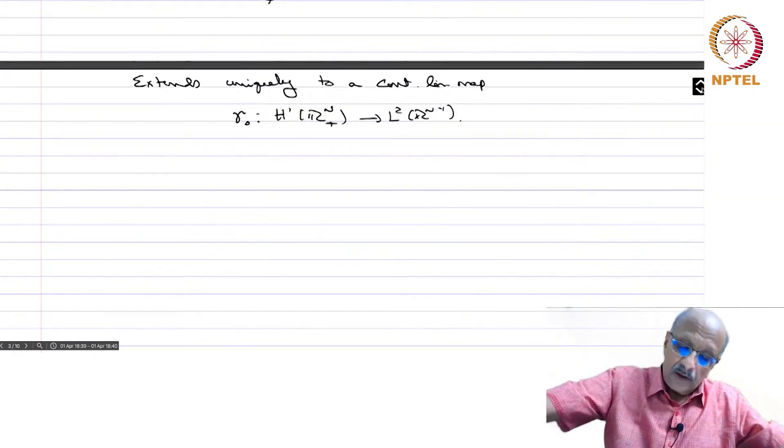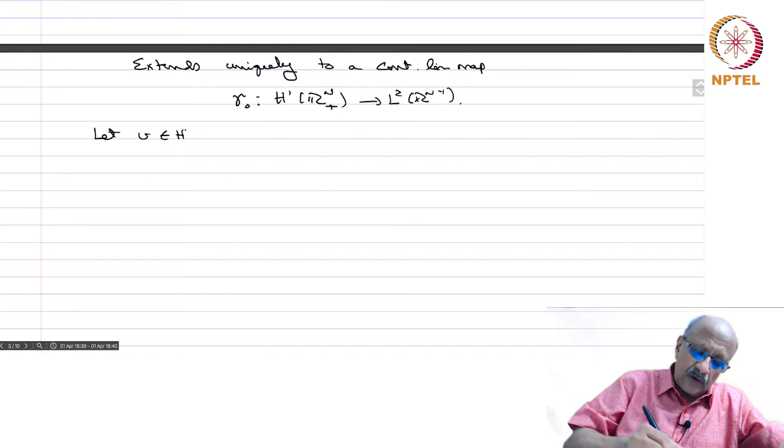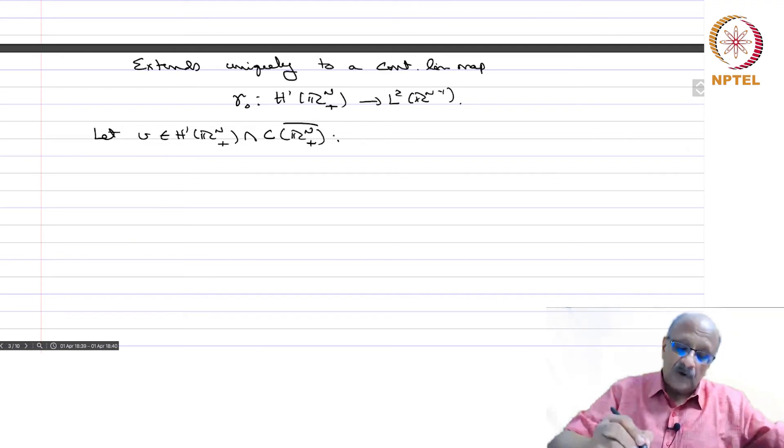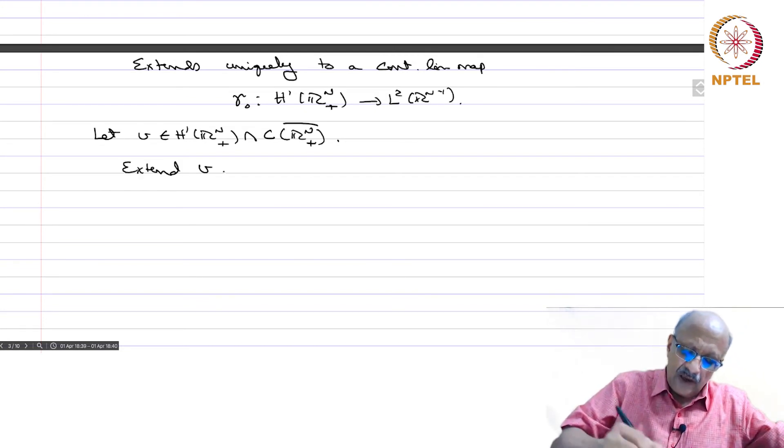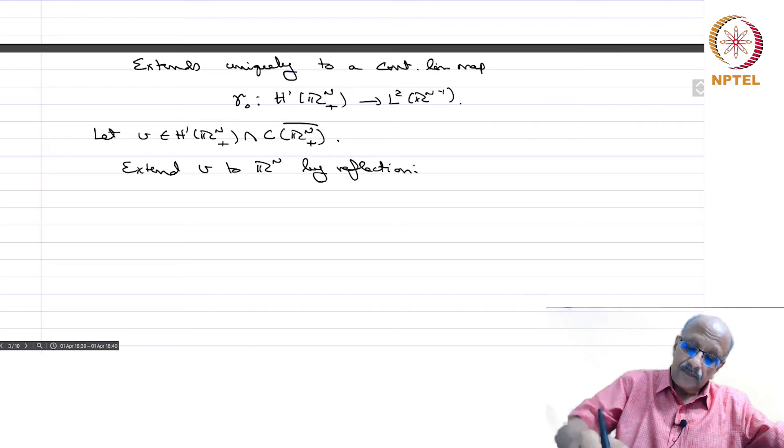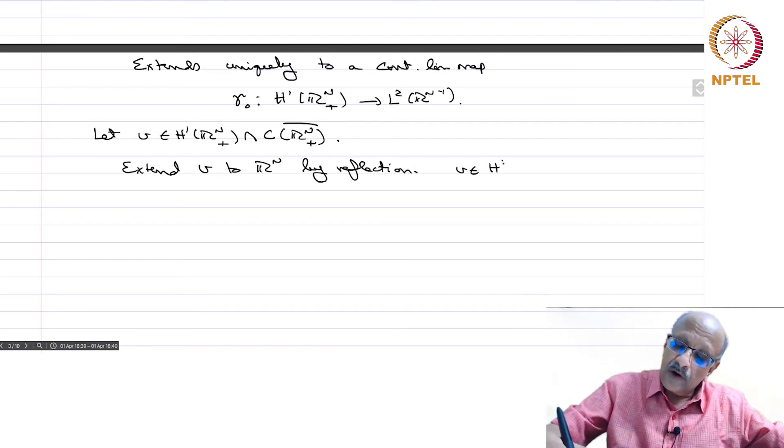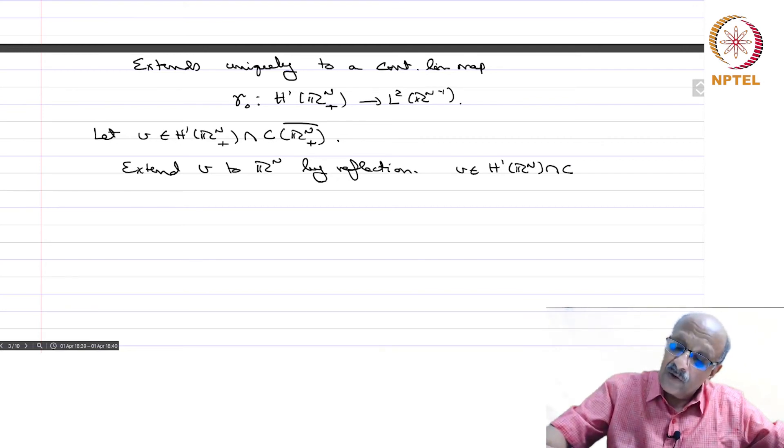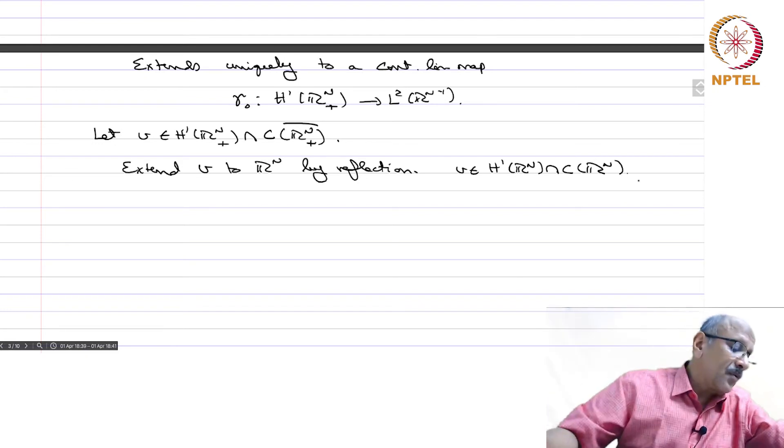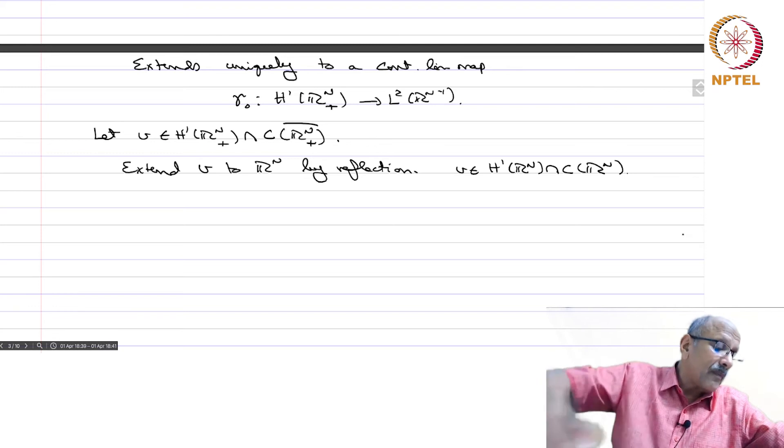So V going to V of x dash 0 gives you a continuous linear map of D of Rn restricted to Rn plus with norm H1 of Rn plus into L2 of Rn minus 1. And therefore, the D of Rn restricted to Rn plus is dense in H1 of Rn plus, one of the earliest theorems we proved in fact for any P, and therefore in particular for P equals 2. And therefore, this extends uniquely to a continuous linear map which we call gamma 0 from H1 of Rn plus into L2 of Rn minus 1.